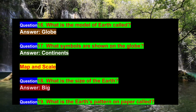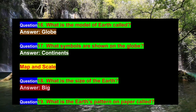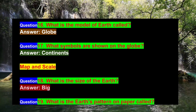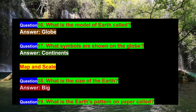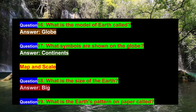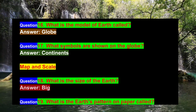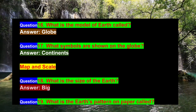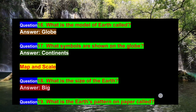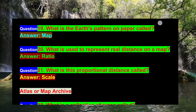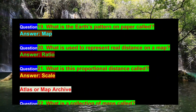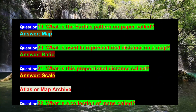Question 17: What symbols are shown on the globe? Answer: Continents, Map, and Scale. Question 18: What is the size of the Earth? Answer: Big. Question 19: What is the Earth's pattern on paper called? Answer: Map.